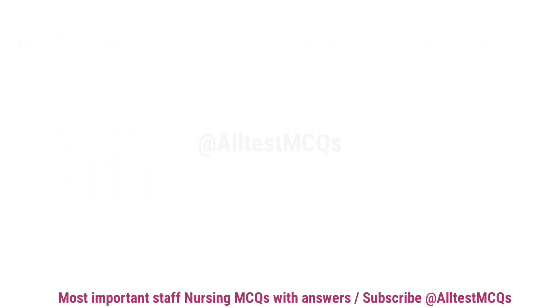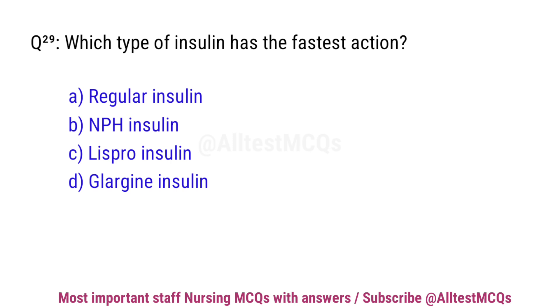Question number 29. Which type of insulin has the fastest action? The correct option is C: Lispro insulin.